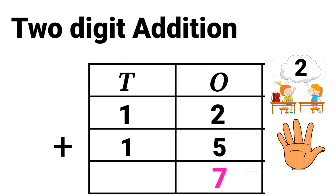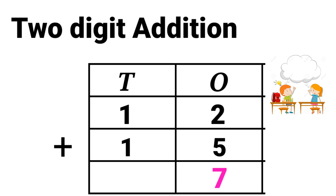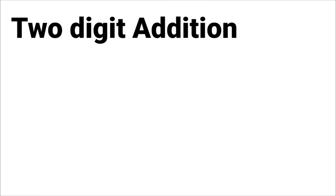The next step is to add the tens space. 1 plus 1. 1 in the mind and 1 in the finger. So 1 after 2. The answer is 1 plus 1 is equal to 2. Now let's see the sum.